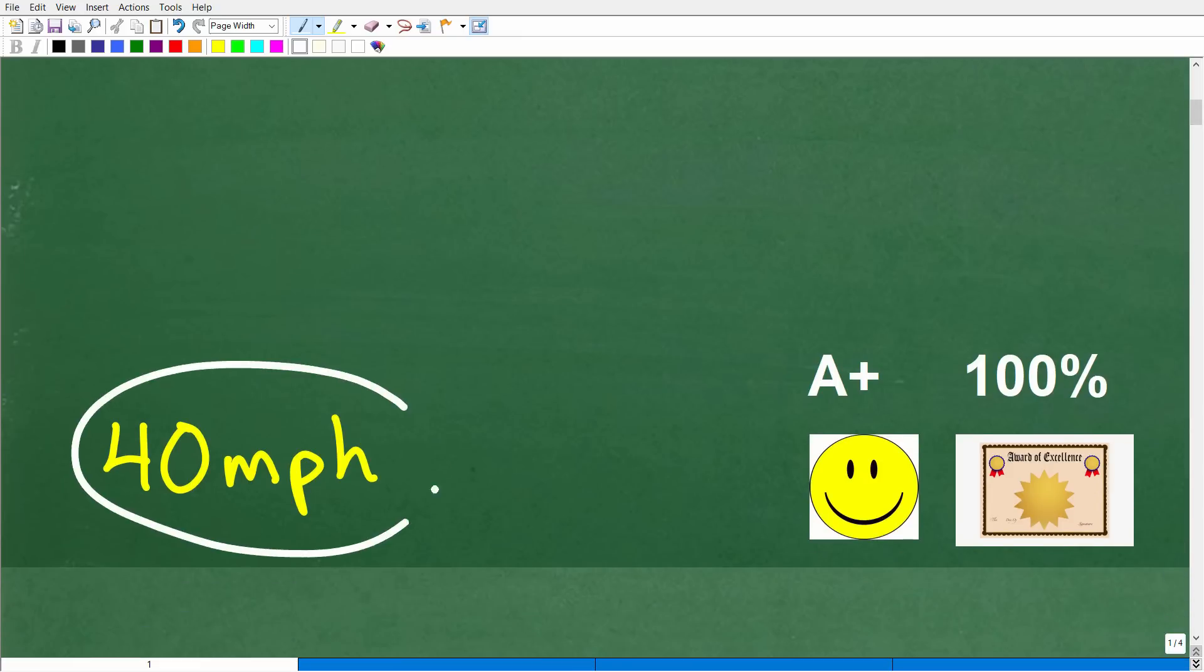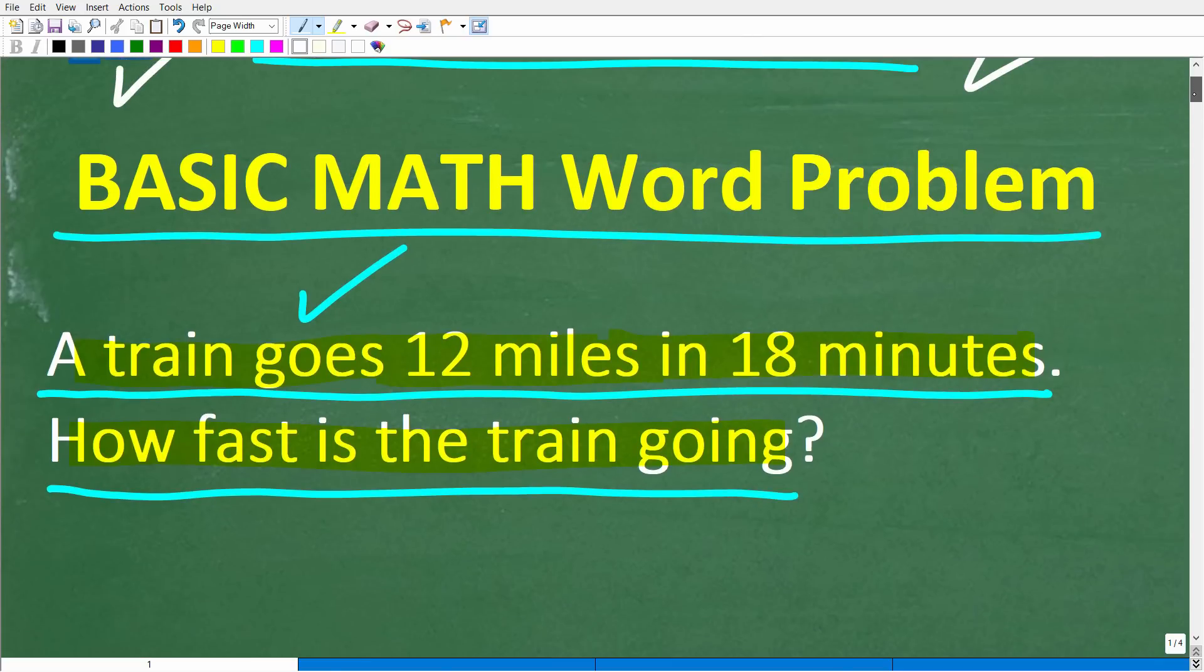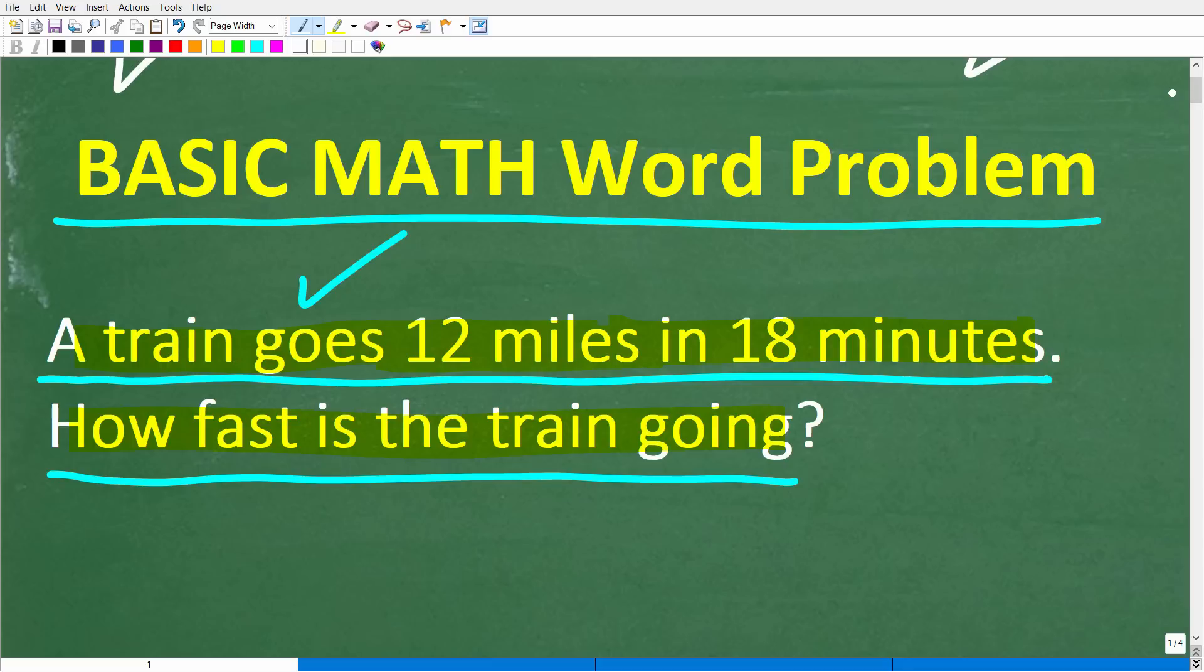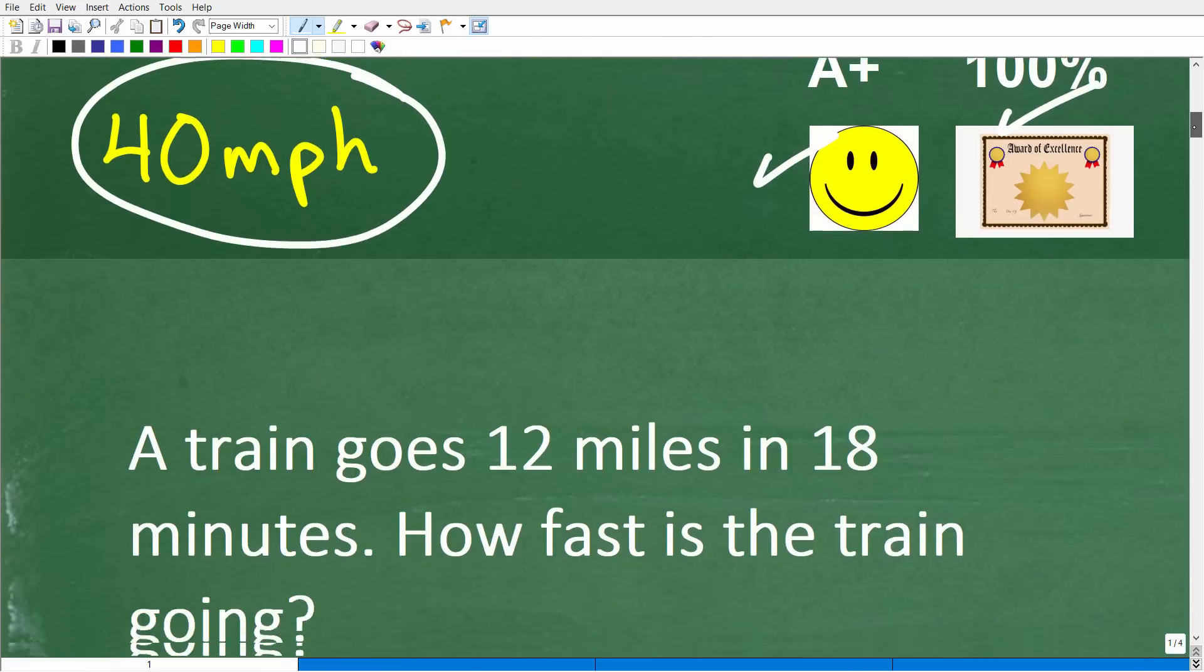The correct answer is 40 miles per hour. Now, if you got this right, you definitely get an A+, 100%, a happy face, and a certificate of excellence for being a certified professional expert in the area of solving rate, time, and distance problems. Now, this is a very common type of math problem. And if you had a tough time with this, well, I'm glad that you found this video because you're going to learn a thing or two. And if you are a math student, you definitely need to know how to solve these type of problems. But the good news is they are pretty easy. So let's get into it right now.